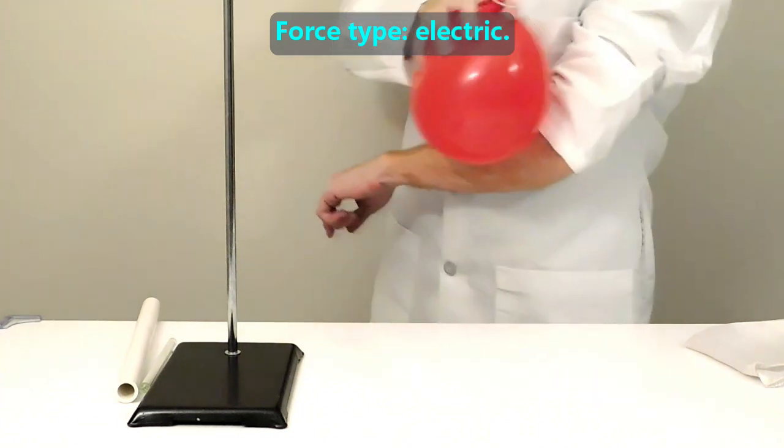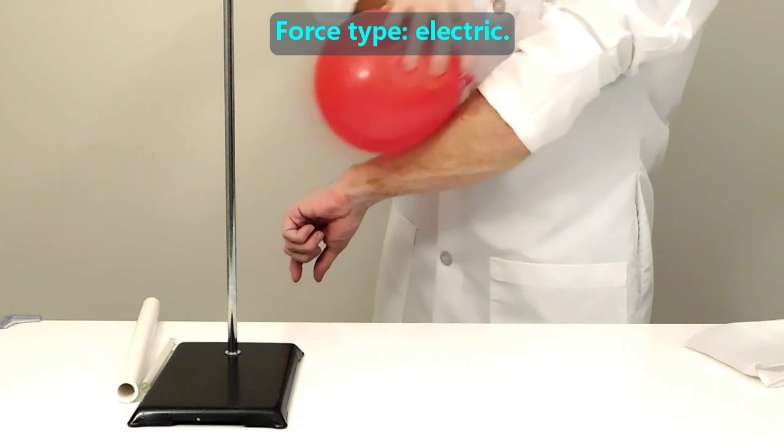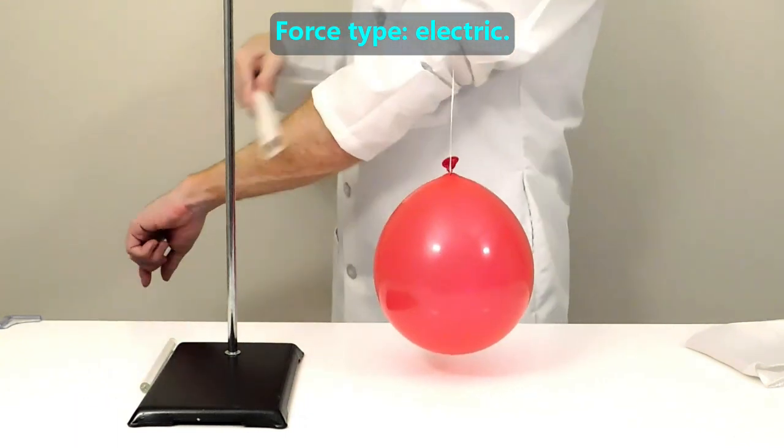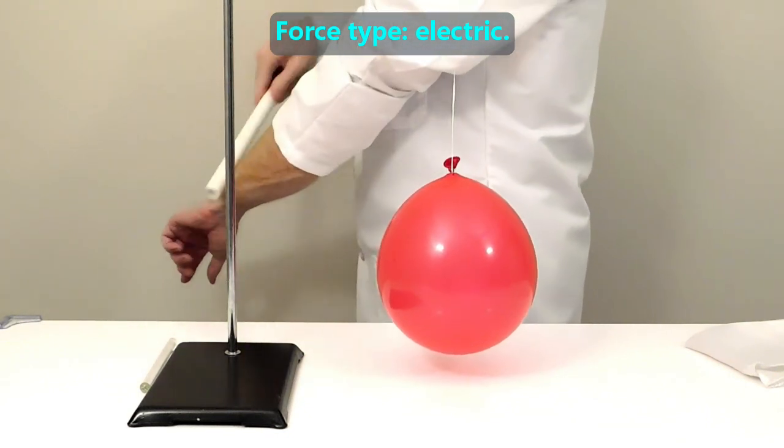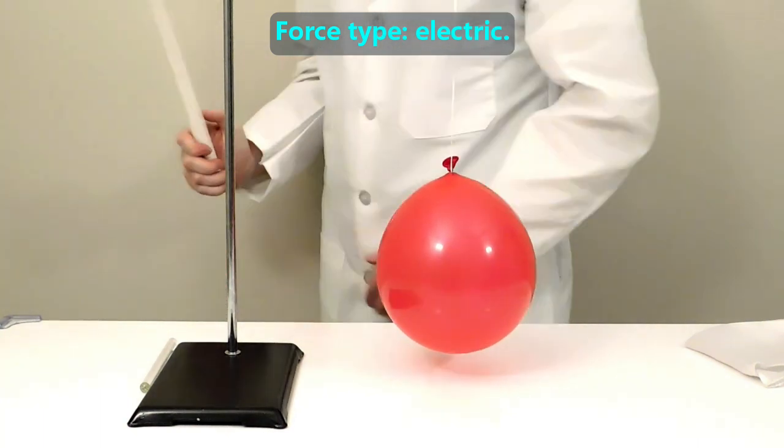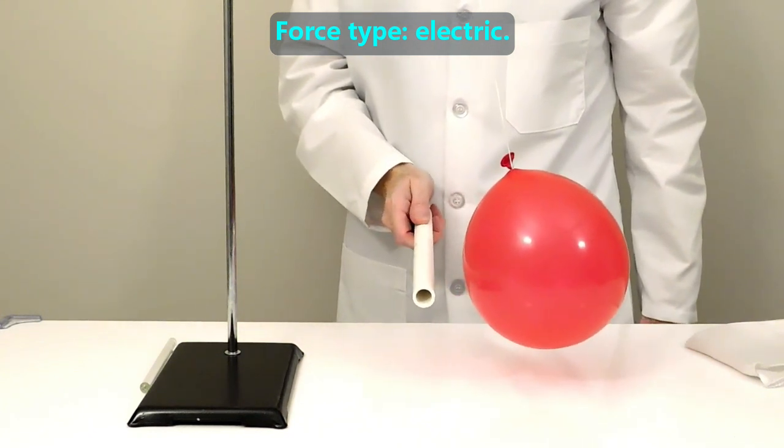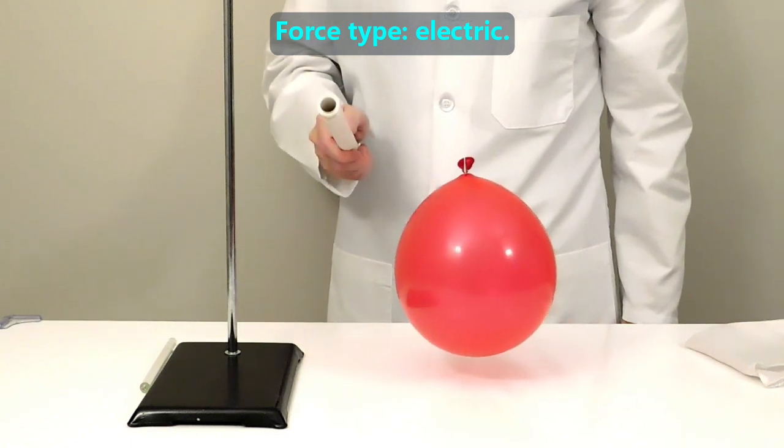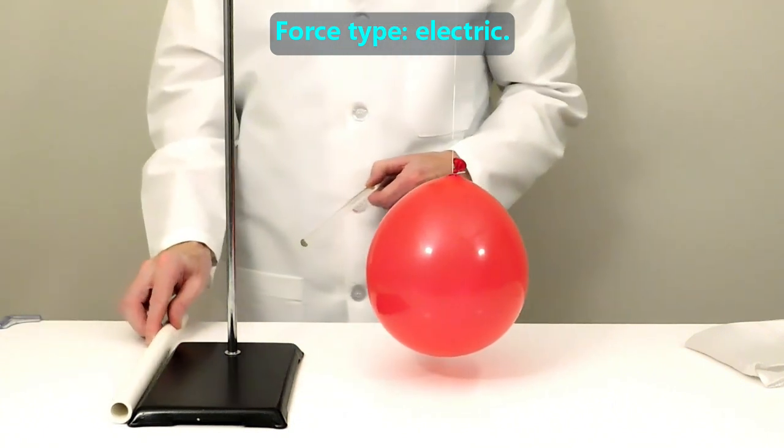By rubbing this balloon against his arm, this man puts a negative charge on the balloon. Then, he rubs the PVC pipe on his arm and likewise puts a negative charge on the pipe. Now, when he brings the PVC pipe next to the balloon, the PVC pushes the balloon away. That's because both the balloon and the PVC are negatively charged and charges that are alike will push against each other, similar to how poles of magnets that are alike push against each other.